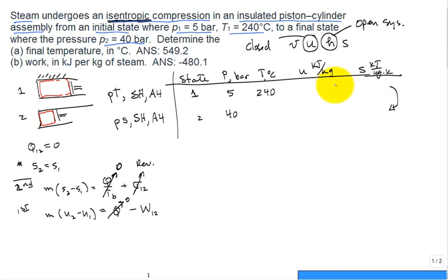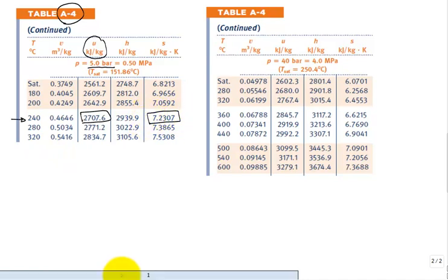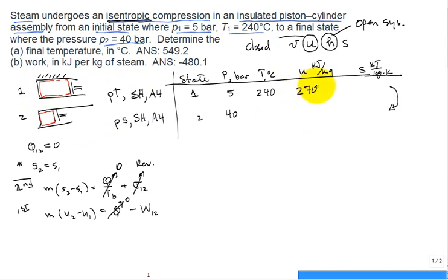I suspect this is still superheated and we'll still use table A4. Let's get some numbers. We come to table A4 for steam, look down to find the right pressure block at 5 bar, find our initial temperature of 240, and find the U of interest: 2707.6, and the S of interest: 7.2307. Let me write those values in our table.